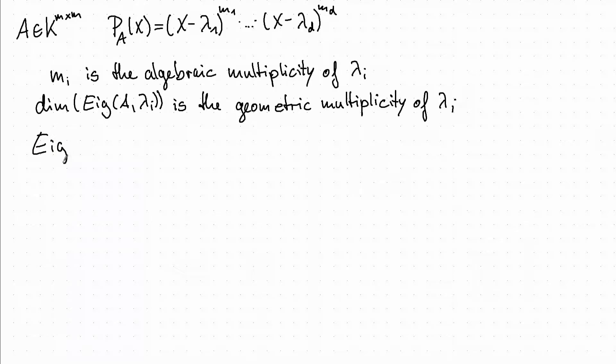So we define eig_k of A and an eigenvalue lambda to be the kernel of (lambda times the unit matrix minus A) to the k and call it generalized eigenspace.